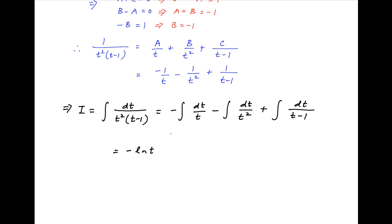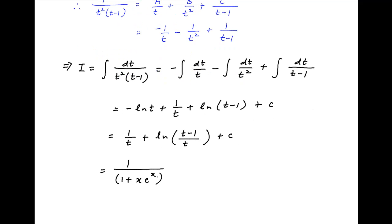This is equal to minus ln t plus 1 upon t plus ln of t minus 1 plus a constant of integration. This simplifies to 1 upon t plus ln of t minus 1 upon t plus the constant of integration. Substituting the value of t, i is equal to 1 upon 1 plus x times e raised to the power x plus ln of x times e raised to the power x divided by 1 plus x times e raised to the power x, plus the constant of integration.